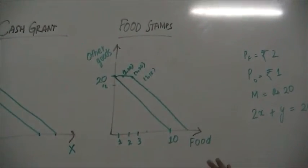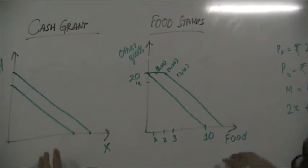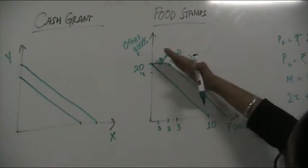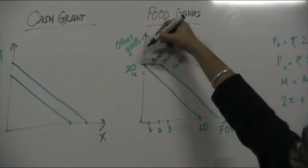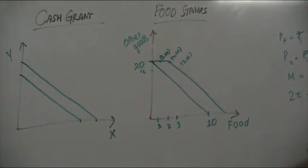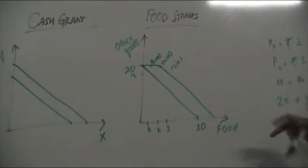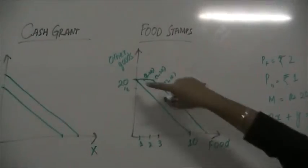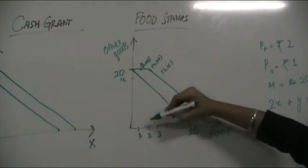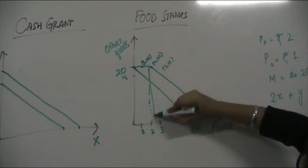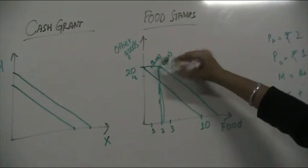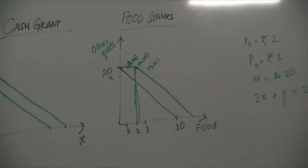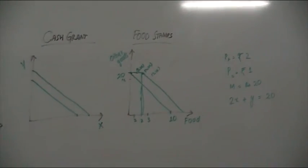Notice that this is almost like the cash grant, with the exception that it's chopped off at the y-axis end. This constraint does not extend all the way to the y-axis, because you cannot use the food stamps — which the government has given you, assuming they are not tradable — to buy more other goods. So your budget constraint is flat until the point where you can buy food with the food stamps, there's a kink at that point, and after that your budget constraint is just a shift of the old budget constraint.